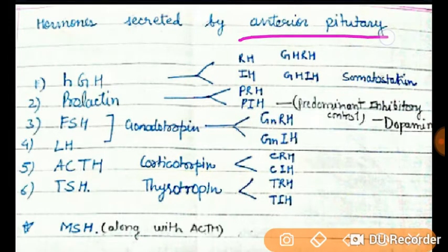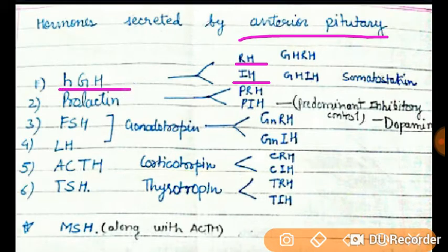Here is the list of hormones secreted by the anterior pituitary. As we know, it is under the control of the hypothalamus — specifically the releasing hormones and the inhibitory hormones.